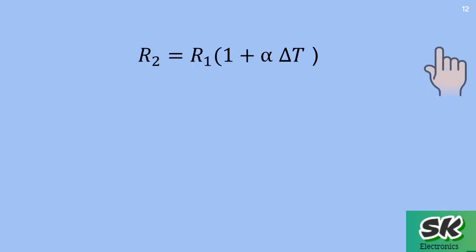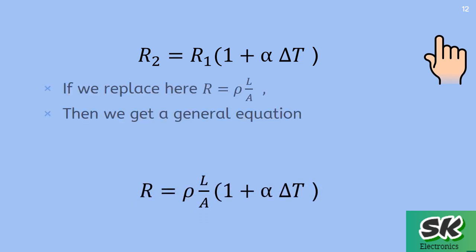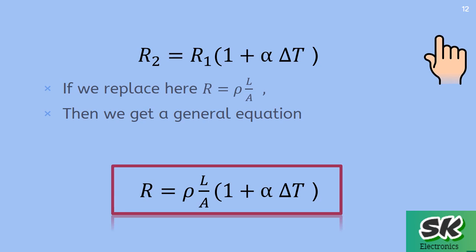Refer to the video on how resistance equals rho times L over A. If we substitute this value of resistance into our expression, we obtain the general equation of the changed resistance.